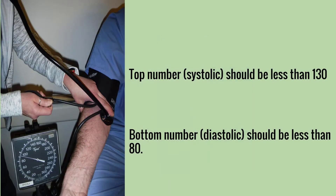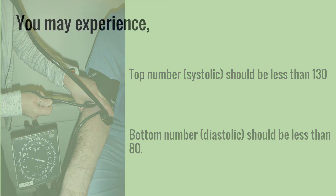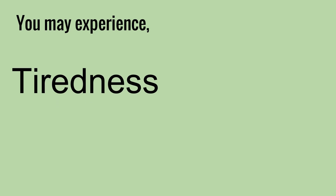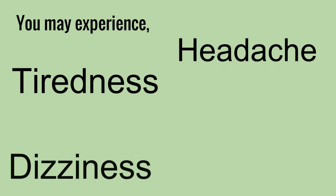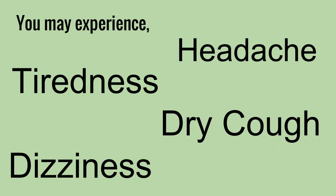High blood pressure is consistent readings greater than 130 over 80. The top number, or systolic, should be less than 130, and the bottom number, or diastolic, should be less than 80. As you get older, your doctor may accept slightly higher readings. ACE inhibitors may cause side effects such as tiredness, headache, dizziness, or a dry cough. As with all medications, call your doctor if these symptoms bother you. Your doctor can adjust your dose or order a different medication so you can receive the benefits without the side effects.